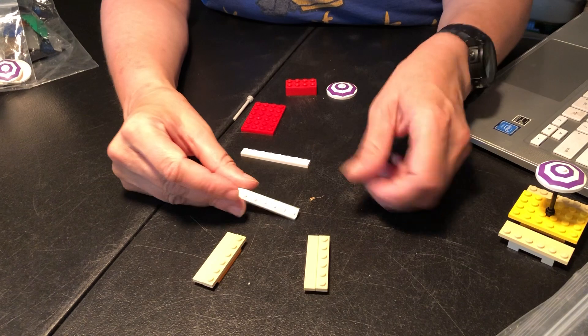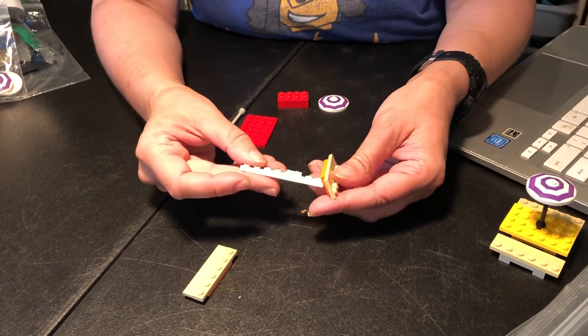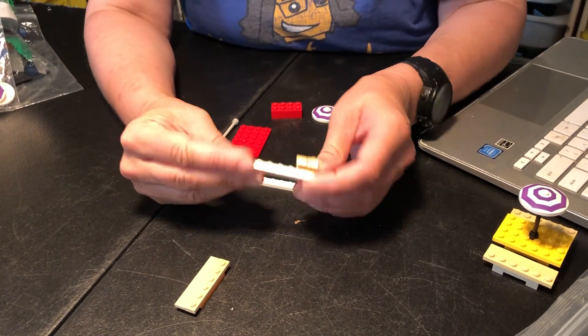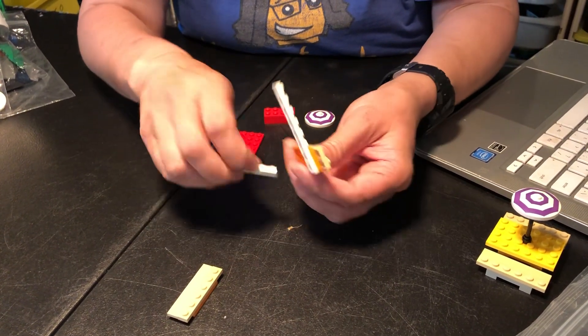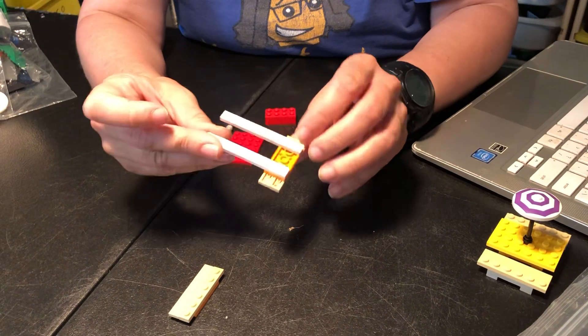Now you have two long 1x8s. You're going to stick one, the studs will be on the outside, the flat side on the inside. And then one here like this.